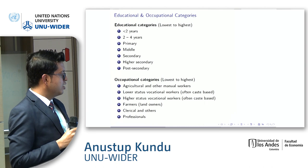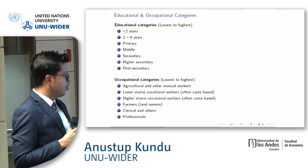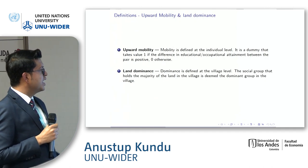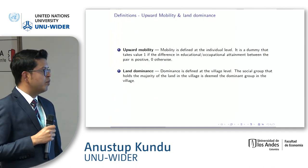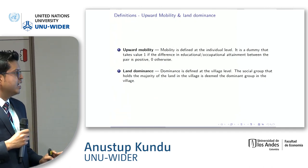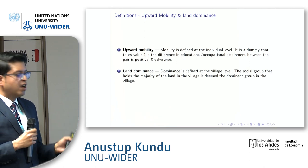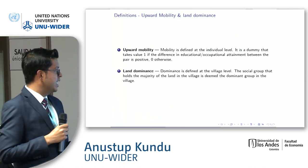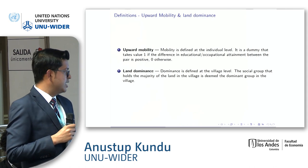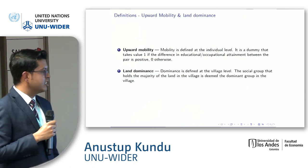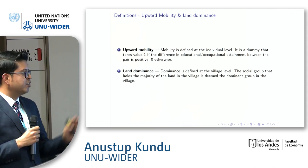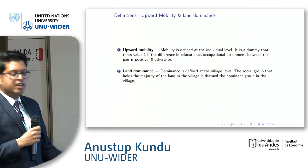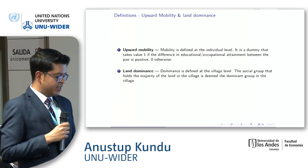We ask: do people move upward, and how does this work? Upward mobility is defined at the individual level as a dummy variable that takes a value of one if educational attainment between generations is positive, and zero otherwise — same for occupational mobility. Dominance for land is defined at the village level: the group that holds the majority of land is deemed to be the dominant group.